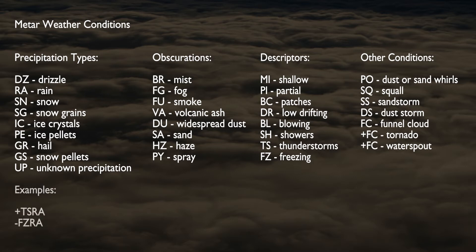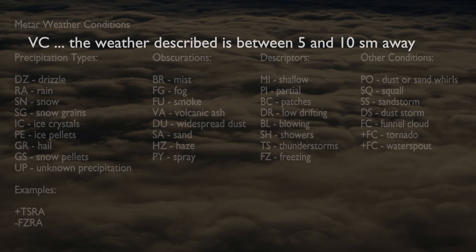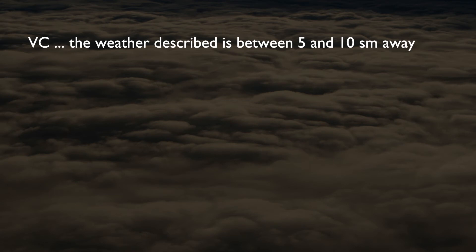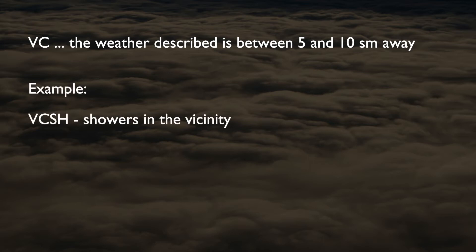If a weather condition is preceded by a minus or plus sign, it is light or heavy respectively. For example, plus TSRA means thunderstorms with heavy rain. If VC is listed in the weather portion of a METAR, it indicates the weather is between 5 and 10 statute miles from the observation station. For example, VCSH means there are showers in the vicinity between 5 and 10 statute miles from the station.